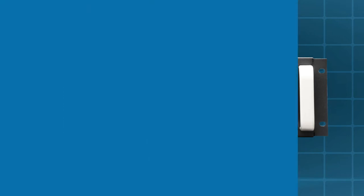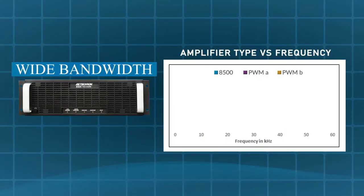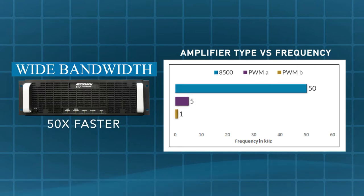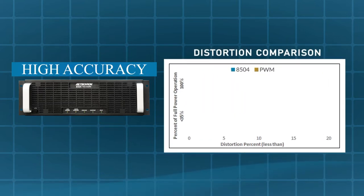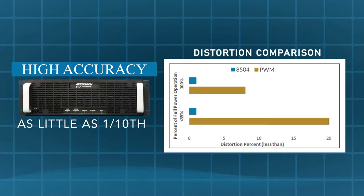An 8500 series amplifier offers wide bandwidth capable of up to 50 kilohertz or more than 50 times faster, and high accuracy, distortion, stability versus line voltage, and ripple voltages as little as one-tenth the levels of those currently available from digital amplifiers.